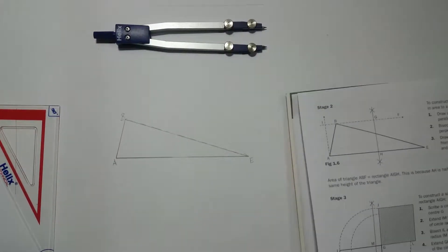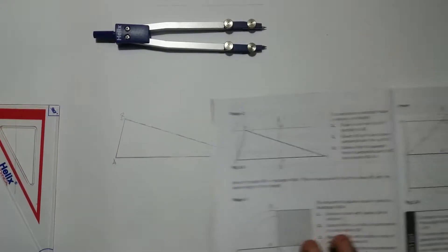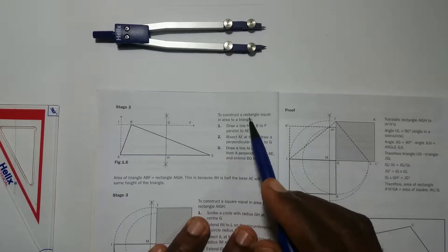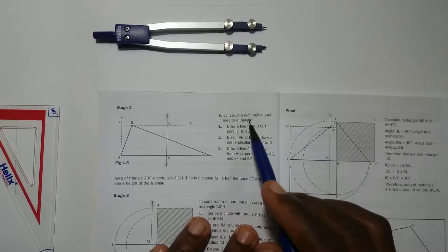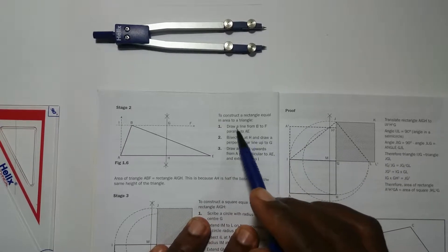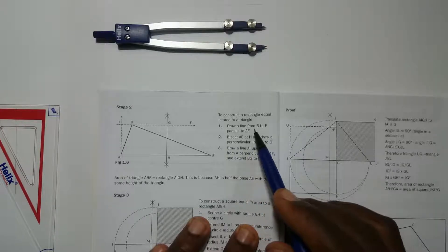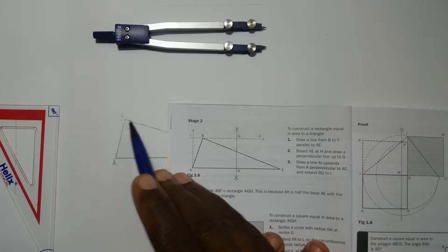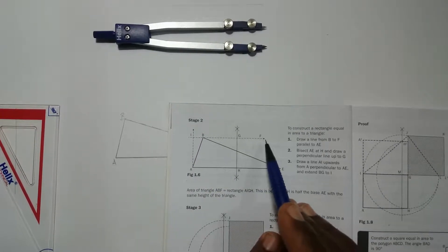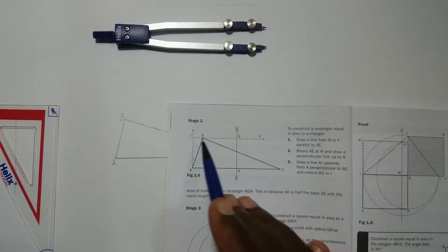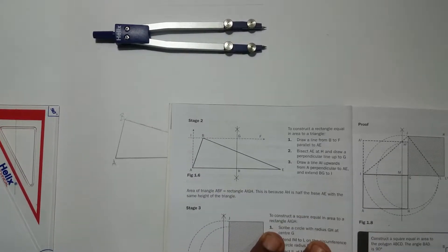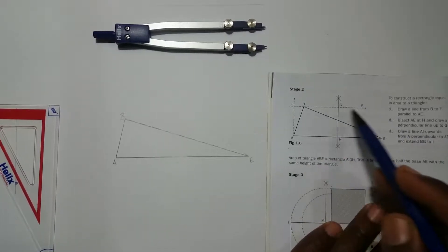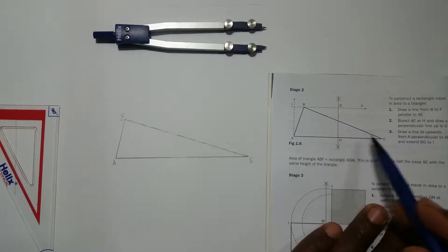You have ABE. What we're gonna do now is the same thing - we're gonna construct a rectangle equal in area to a triangle. So we have the triangle already. We're gonna draw a line from B to F, from B to F, which is a horizontal line. If you have your t-square and you're using a board, you have to draw a parallel line to the baseline of your triangle.